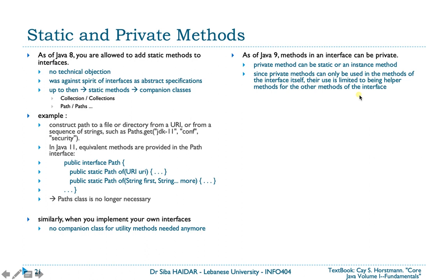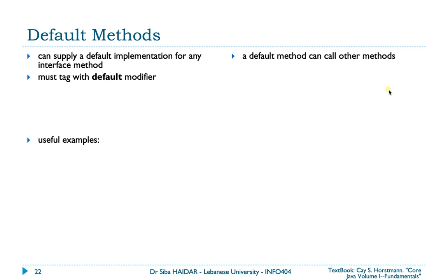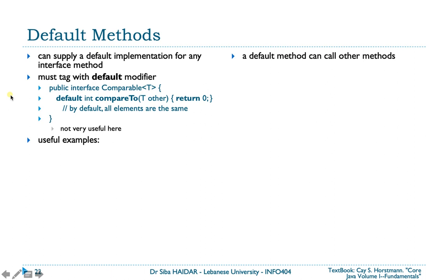Let's move to default methods. Even if they are neither private nor static, you can supply a default implementation for any interface method. You must tag the method with the 'default' modifier and write the implementation. For example, in public interface Comparable, you can provide a default implementation for compareTo that returns zero — meaning by default all elements are considered equal. Not very useful, but that's how you do it.